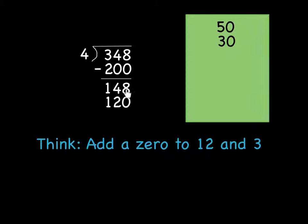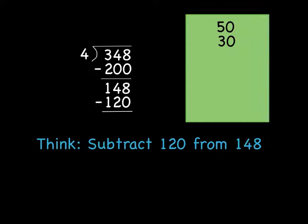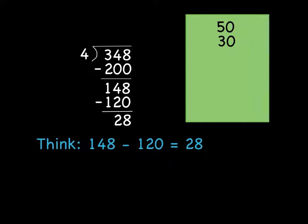And because this was still a 3-digit number, this needs to be a 3-digit answer. So I'm going to have to add a 0 here, and add a 0 to the 3 I wrote up there, keeping them lined up like we did before. Subtract 120 from 148, and you get 28 as your difference.